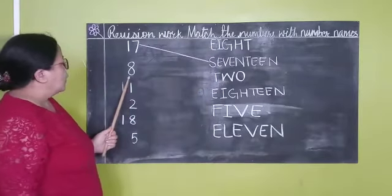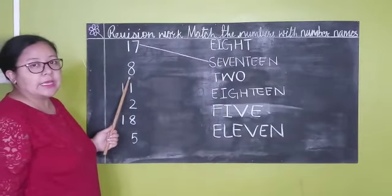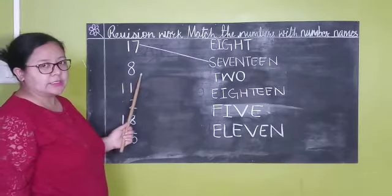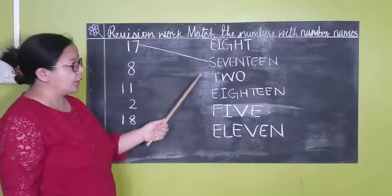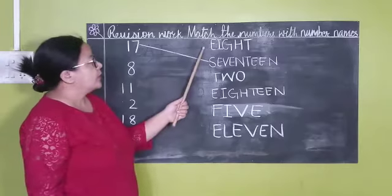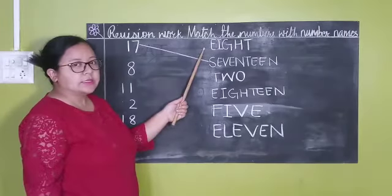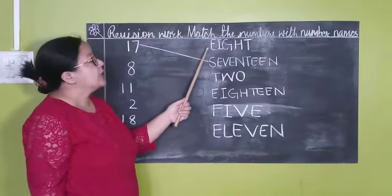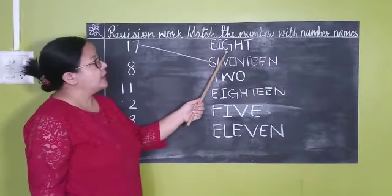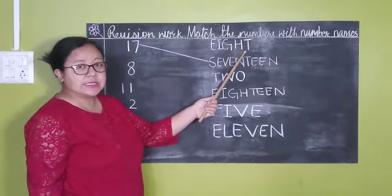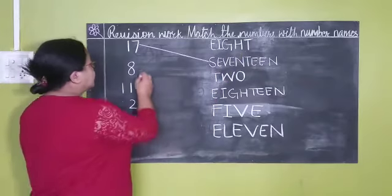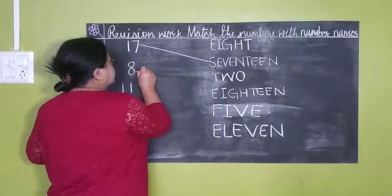17. Okay? What number is this? 8. What number is this? 8. Now find out where is 8. Is this 8? Yes. Because E, I, G, H, T, 8.